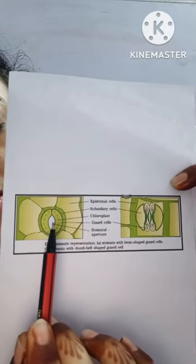These guard cells' outer lining is thin and inner lining is thick. They are enclosing a pore which is called the stomata pore, a pore-like structure in the central point.